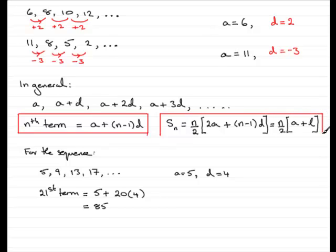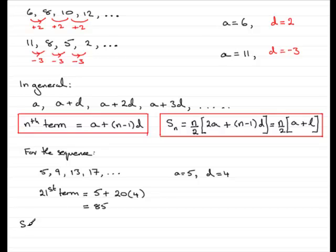If you'd like to see a proof of this — because some exam boards do ask you to prove this particular formula — then you can see that in one of my other videos. So let's show you how this works. Let's take this series here: 5, 9, 13, 17, and so on. Suppose I want to find the sum of the first 21 terms — that would be S₂₁.